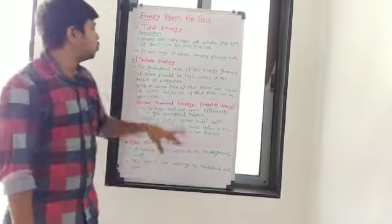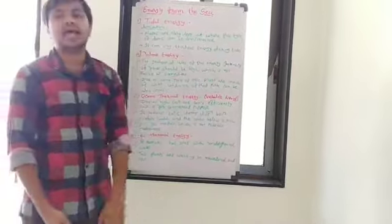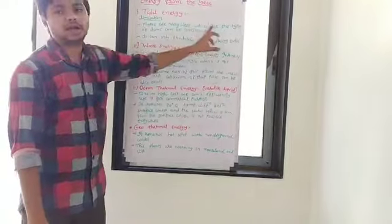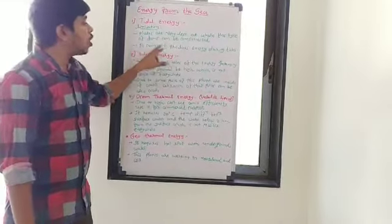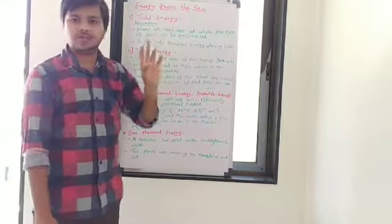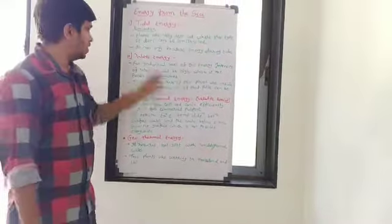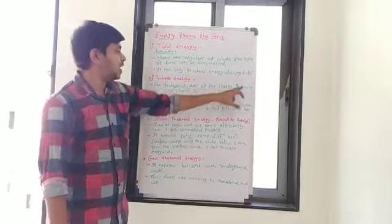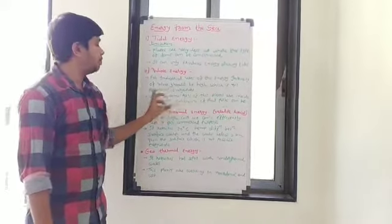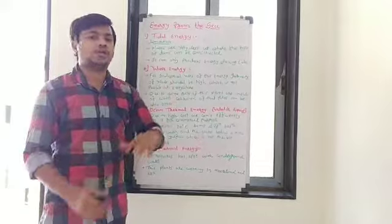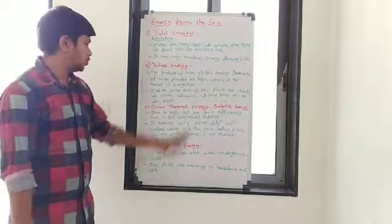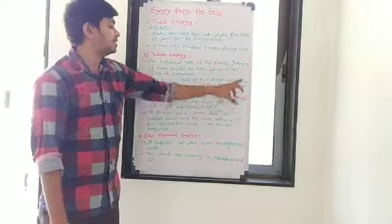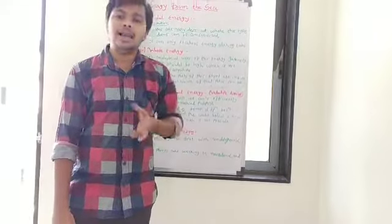For that question, write two limitations for each energy type. For tidal energy: first, the places where these dams can be constructed are very few; second, it can only produce energy during tides. For wave energy: first, for industrial usage the intensity of waves should be high, which is not possible everywhere; second, corrosion of parts can occur since some parts are inside the water.